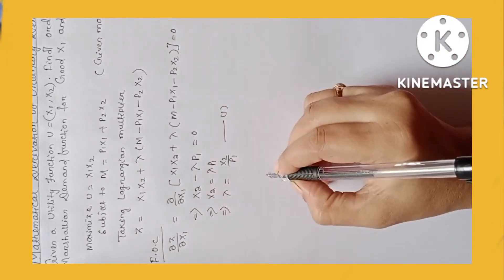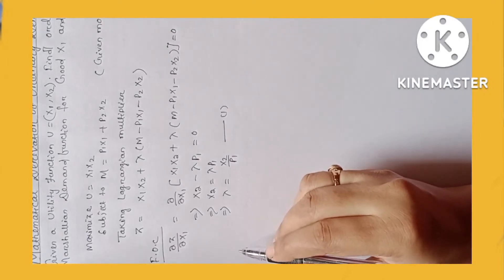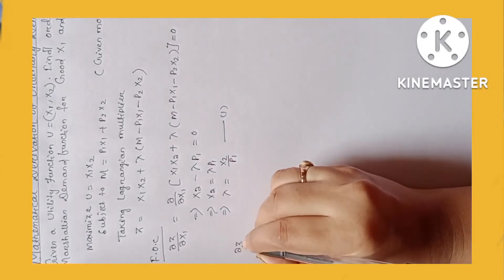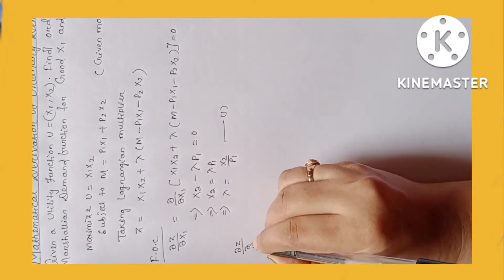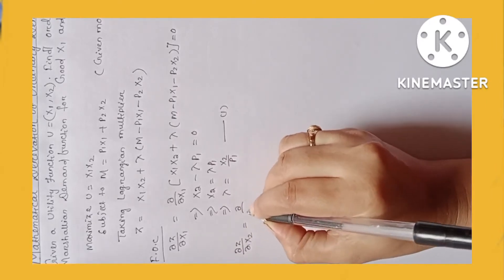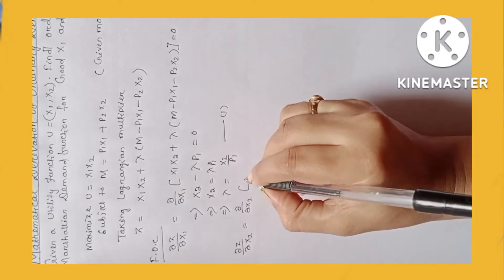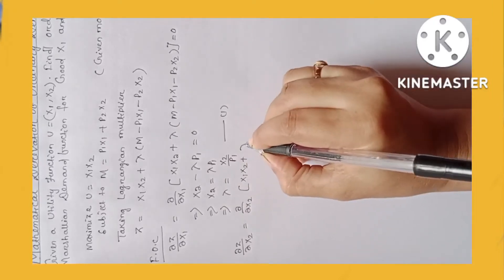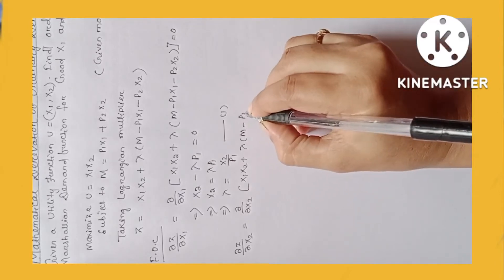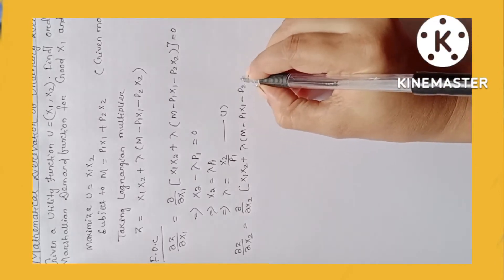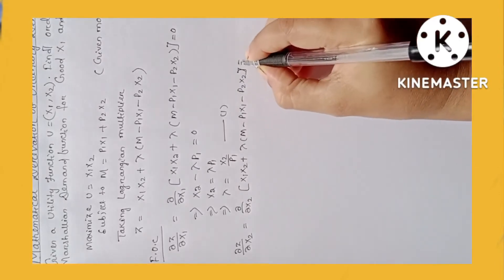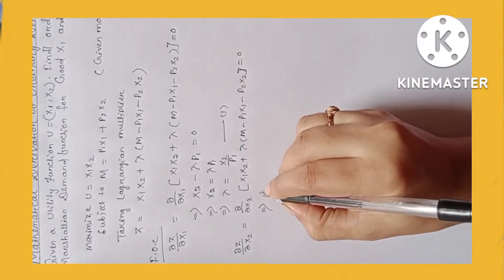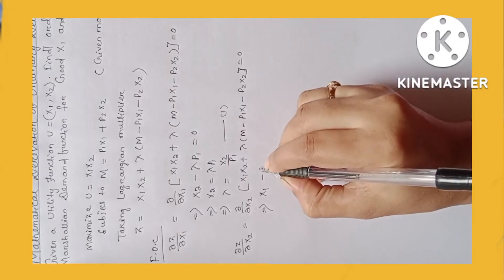Now we will derive the first-order partial derivative with respect to x2: dz/dx2 equals d/dx2 of (x1·x2 + lambda·(m − p1·x1 − p2·x2)) equals 0. This implies x1 minus lambda·p2 equals 0.